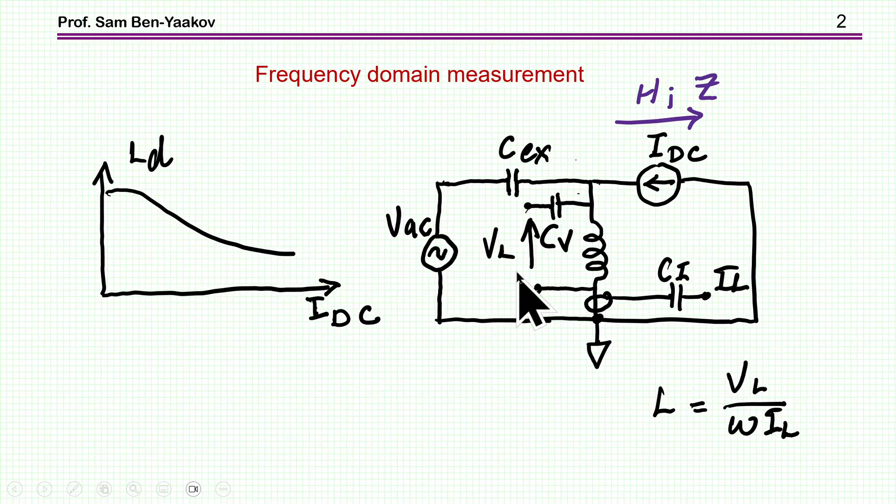The classical way of measuring the inductance would be to inject a DC current into the inductor, and then to have some AC excitation. Here I'm showing a voltage, this will be a small signal, a small amplitude AC signal at the given frequency. Then we measure the AC current through the inductor and the AC voltage across it, and by the impedance relationship we find the inductance.